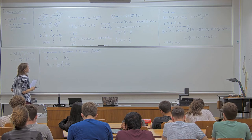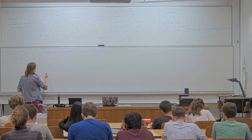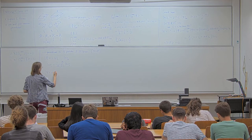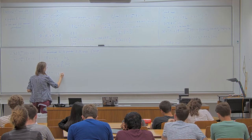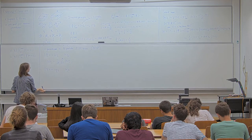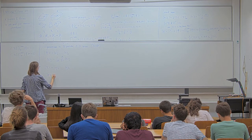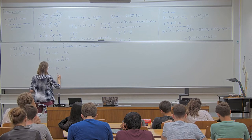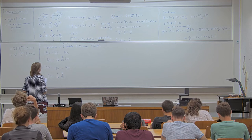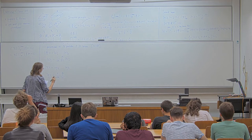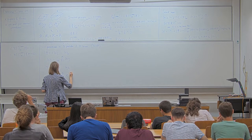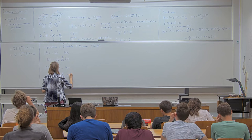Each particle is prepared in the equal superposition of being in each box. The post-selected state Psi is written as eta_1 ⊗ ... ⊗ eta_n, where the state for each particle, eta_j, equals (1/sqrt(m)) * sum from k=1 to m of e^(i*pi*k/m) |k_j⟩. So it's essentially the same superposition but with a phase added to each element.